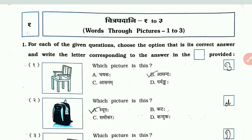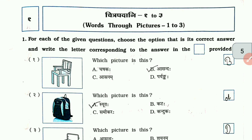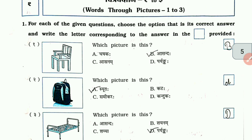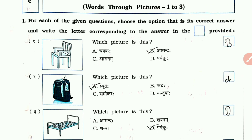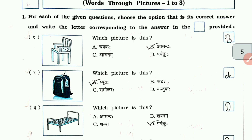Hello friends, welcome back to our YouTube education channel. Today we are going to cover Class 7 Sanskrit Word Book Chapter No. 1, Chitravadhani 1, 2, 3 — Words Through Pictures 1, 2, 3. Question No. 1: For each of the given questions, choose the option that is its correct answer and write the letter corresponding to the answer in the box provided.